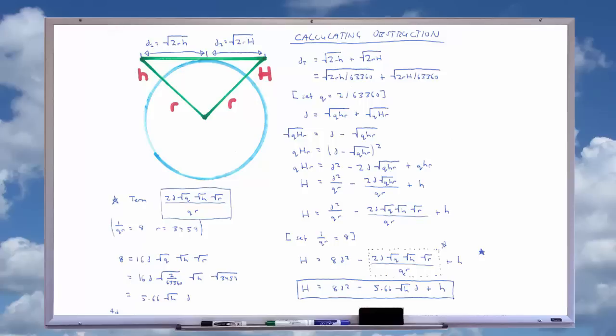Back to the equation then, we simplify the first term on the right hand side, then we substitute in the values. And to understand those values, we'll look at that particular term. If 2d sqrt(q) sqrt(h) sqrt(r) over qr, we know that 1 over qr equals 8, we can substitute in the known values of q and r.